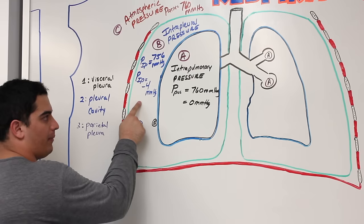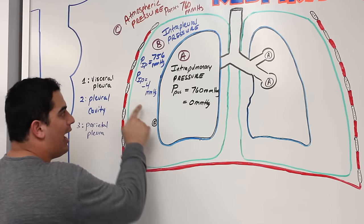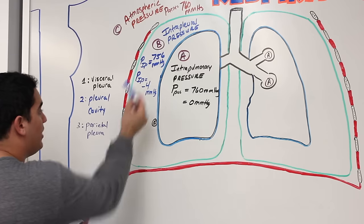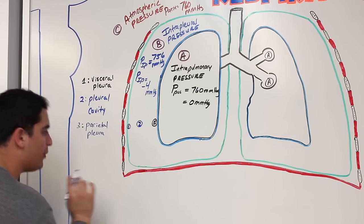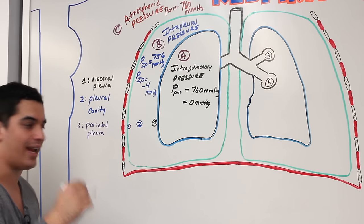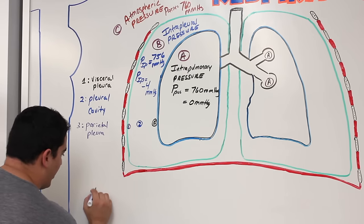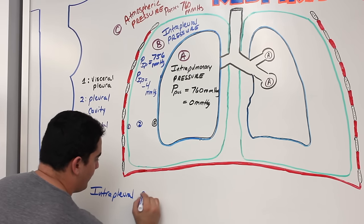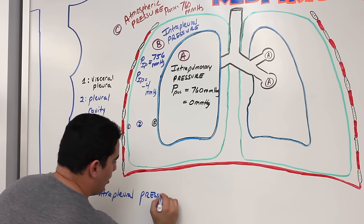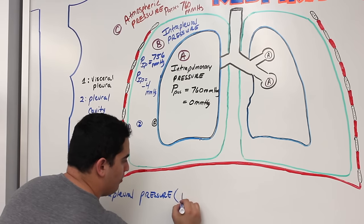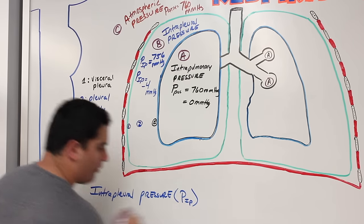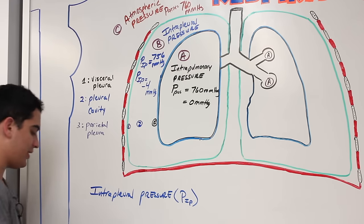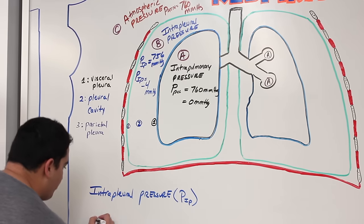The intrapleural pressure is a negative pressure. There are three reasons why the intrapleural pressure (P-IP) is negative: first, the natural elasticity of the lungs; second, surface tension; and third, the elasticity of the chest wall. I'll also mention a fourth factor — gravity — which contributes to differences in intrapleural pressure throughout the pleural cavity.